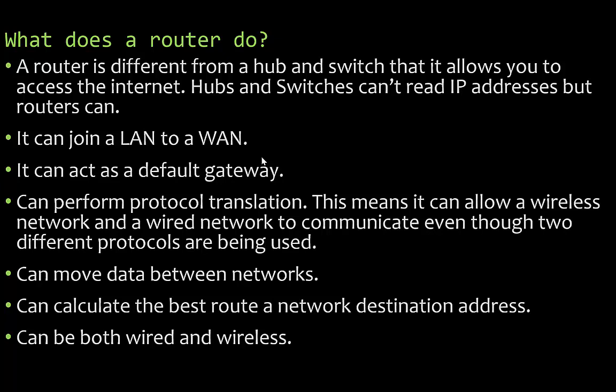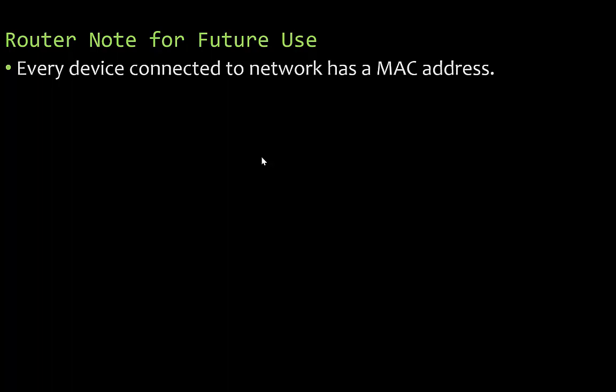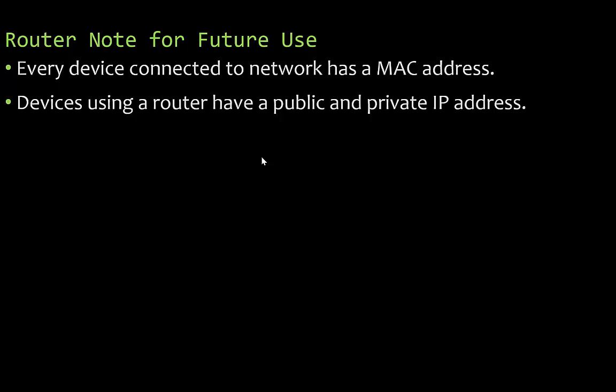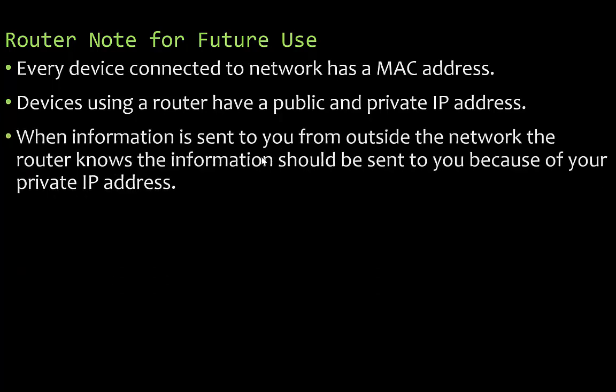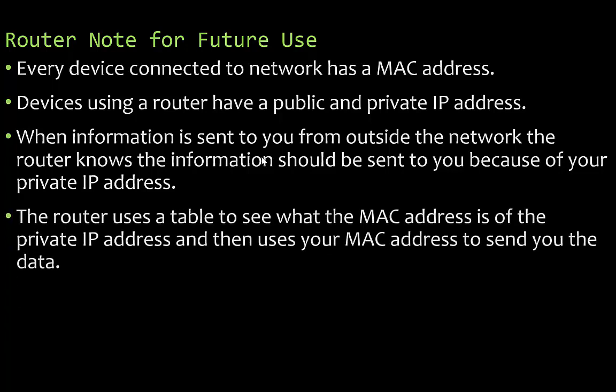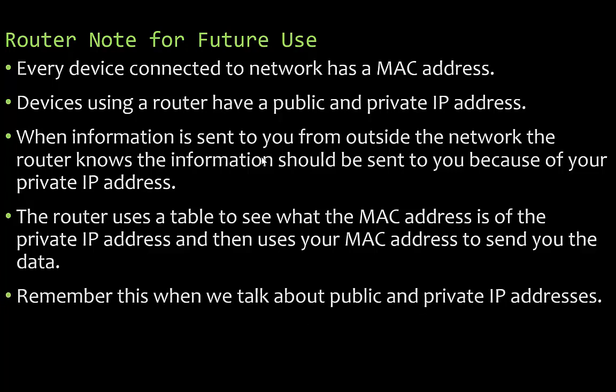Every device connected to the network has a MAC address. Devices using the router have both a public and private IP address. When information is sent to you from outside the network, the router uses your private IP address, then looks up the corresponding MAC address in its table, and uses that MAC address to send you the data. You can have a different private IP address every time you connect — when you unplug and replug your router, it reassigns each device a private IP address tied to its MAC address.